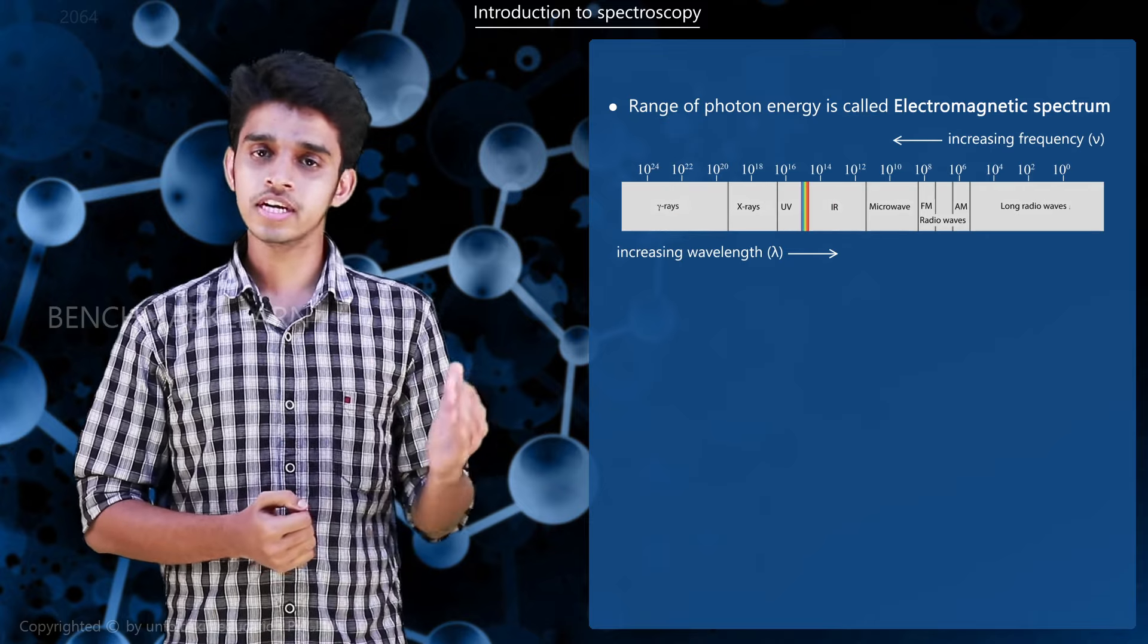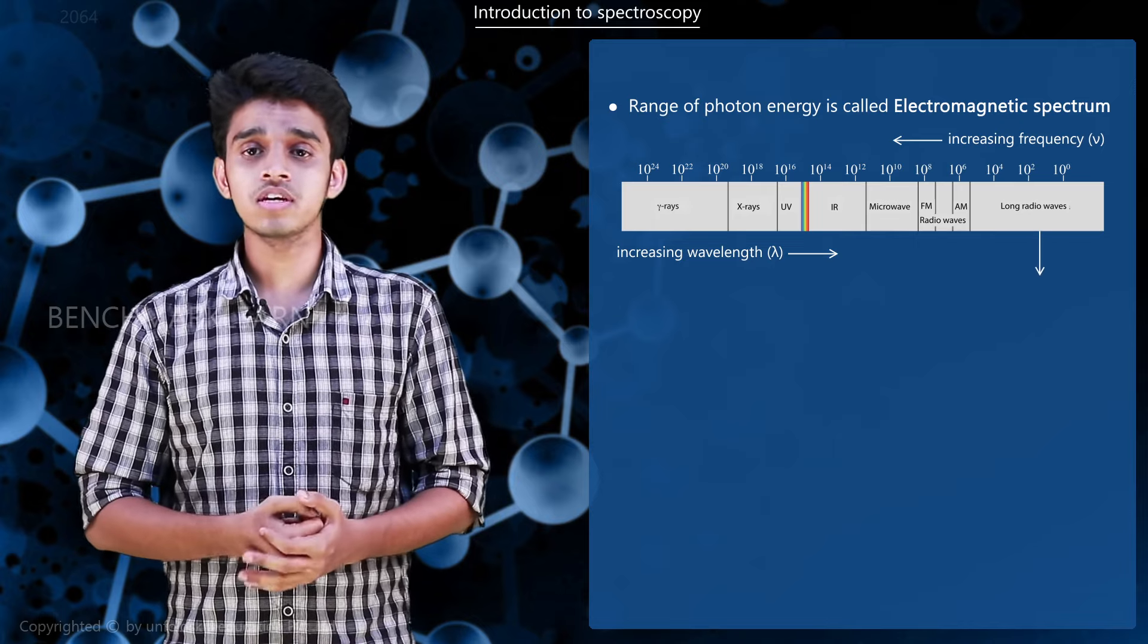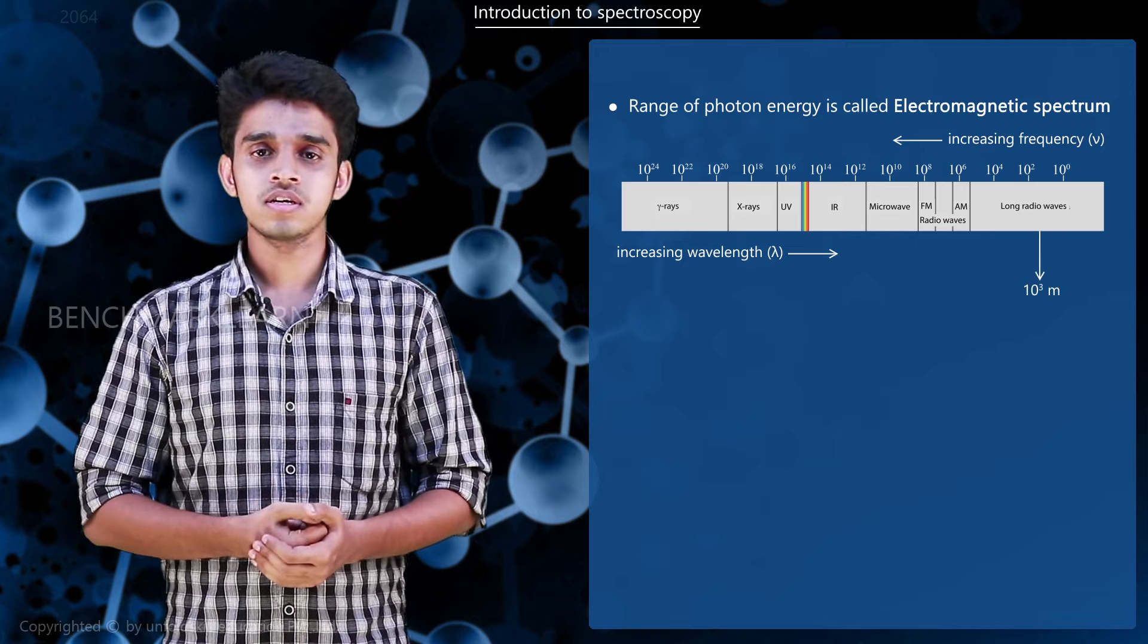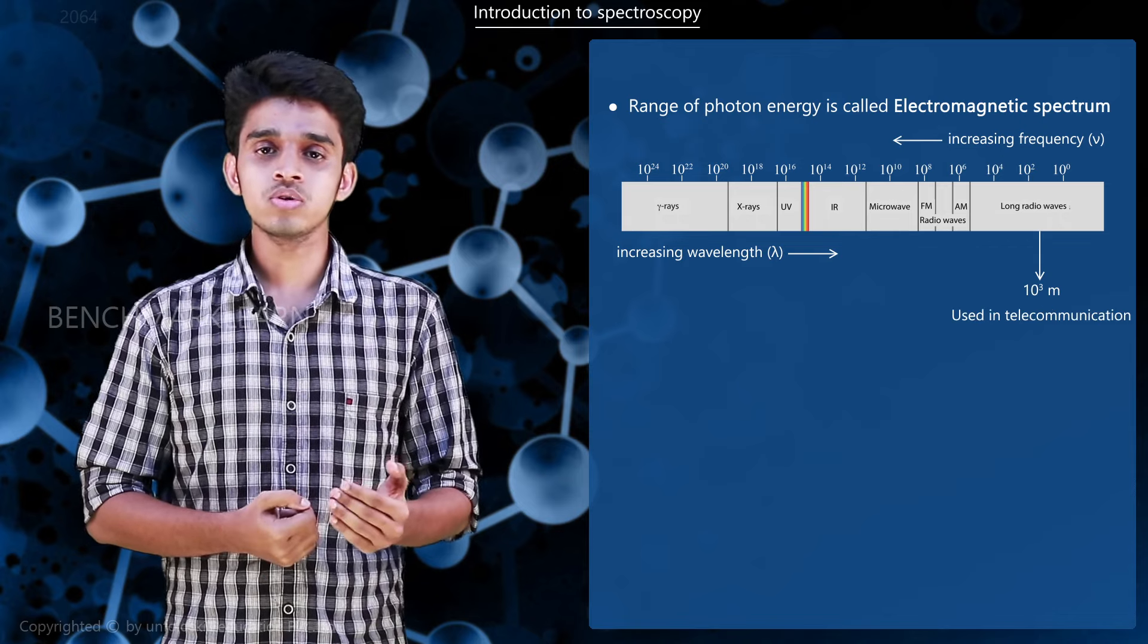At one end we have radio waves which are of very low frequencies but of very large wavelength of 10³ meters. Radio waves are used in telecommunication purposes owing to their large wavelength.